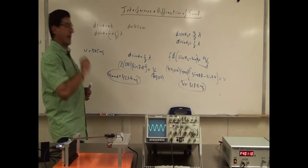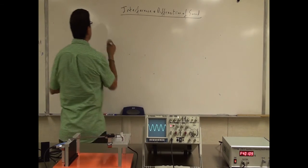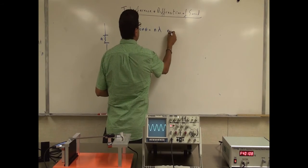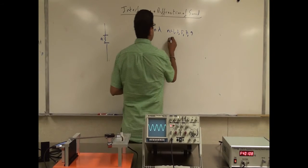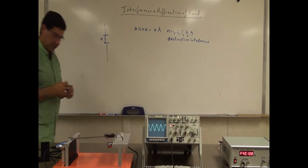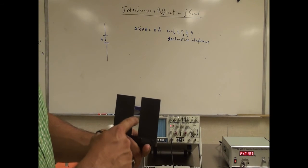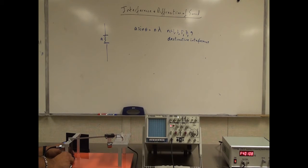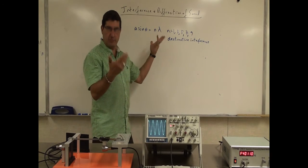Now for diffraction — when a wave goes through a single slit of width a, the equation is a sinθ = nλ, where n = 1, 3, 5, 7, ... These are the angles that give destructive interference. My single slit has a width of 2.5 centimeters = 0.025 m. I center it and will look for the first destructive interference minimum.